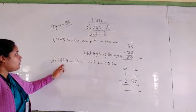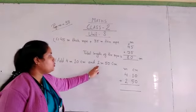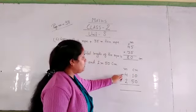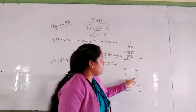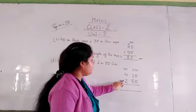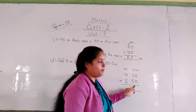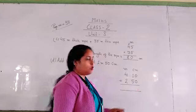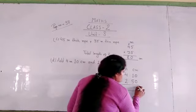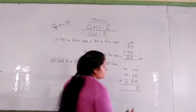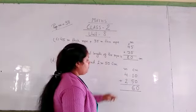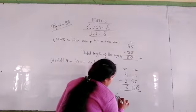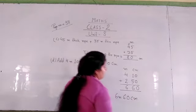Number D: add 4 meter 10 centimeter and 2 meter 50 centimeter. First we write meter and centimeter columns. In the meter column we write 4 meter, and 10 centimeter in the centimeter column. Then 2 meter in the meter column and 50 centimeter in the centimeter column. We start addition from the centimeters column: 0 plus 0 is equal to 0, and 1 plus 5 is equal to 6. Next we add meter: 4 plus 2 is equal to 6. Our answer is 6 meter 60 centimeter.